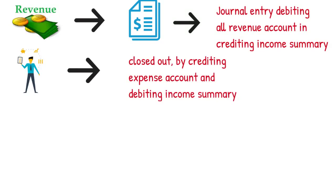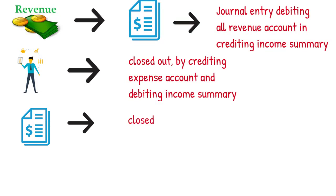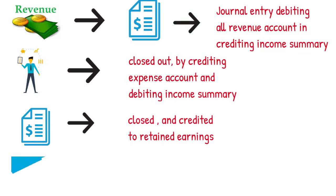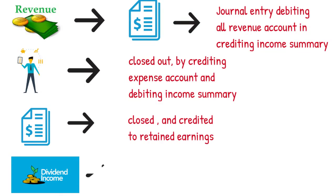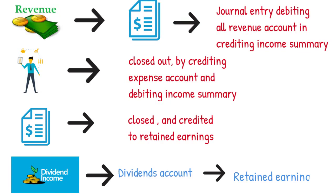Third, the income summary account is closed and credited to retained earnings. Finally, if a dividend was paid out, the balance is transferred from the dividends account to retained earnings.